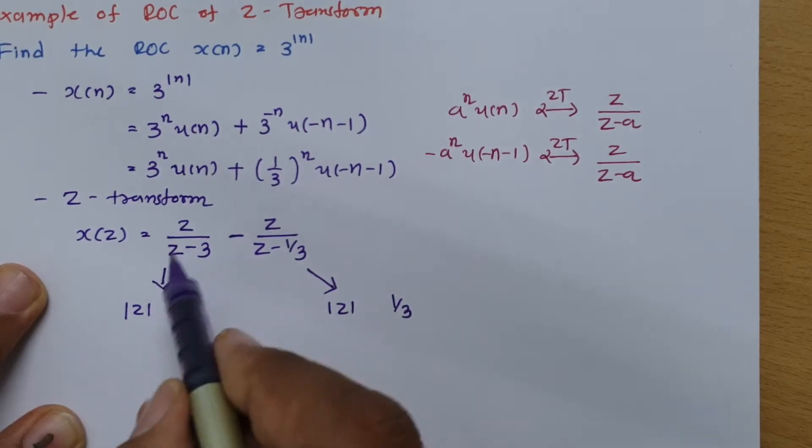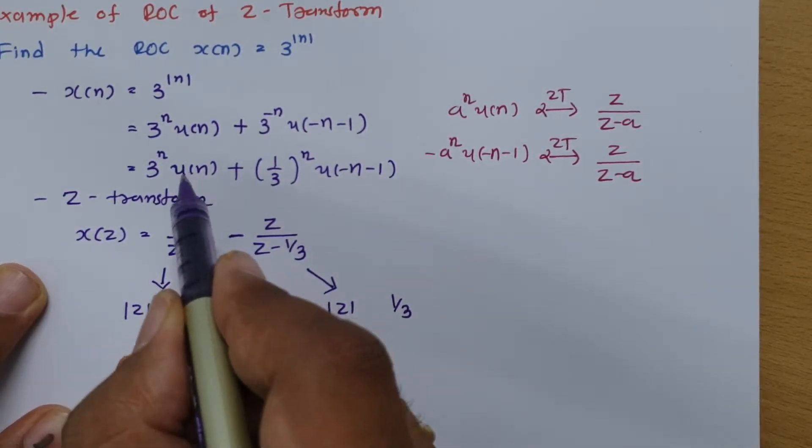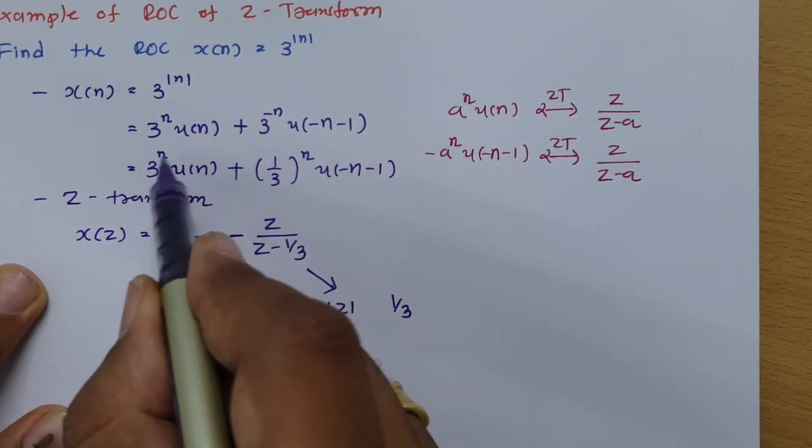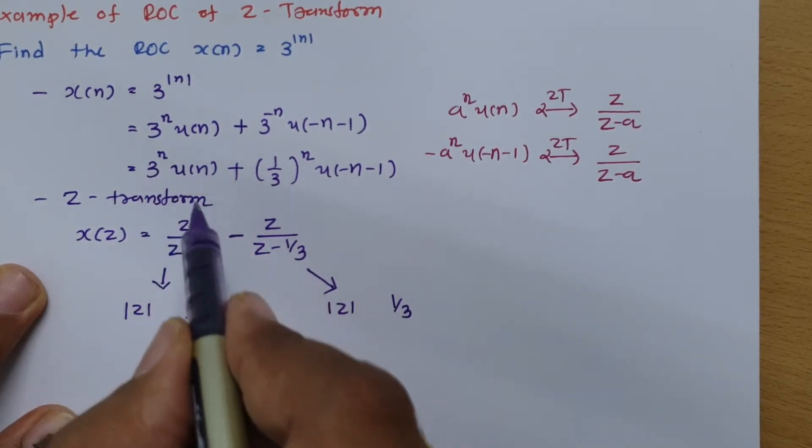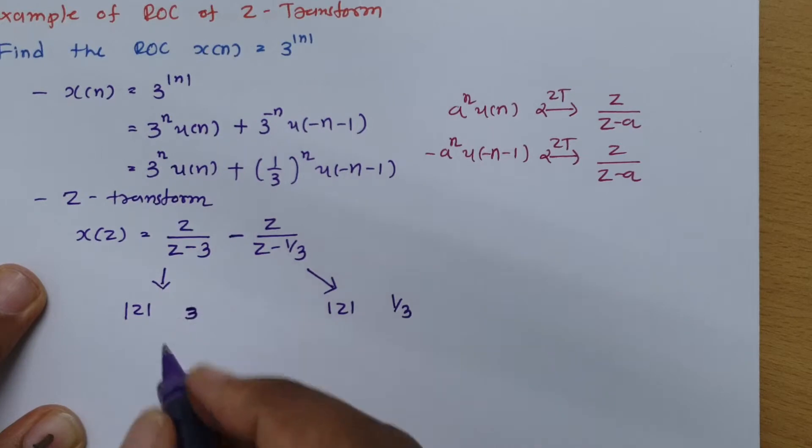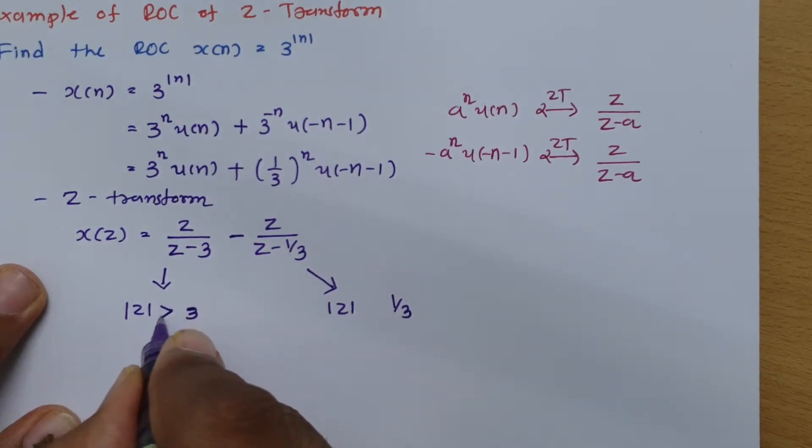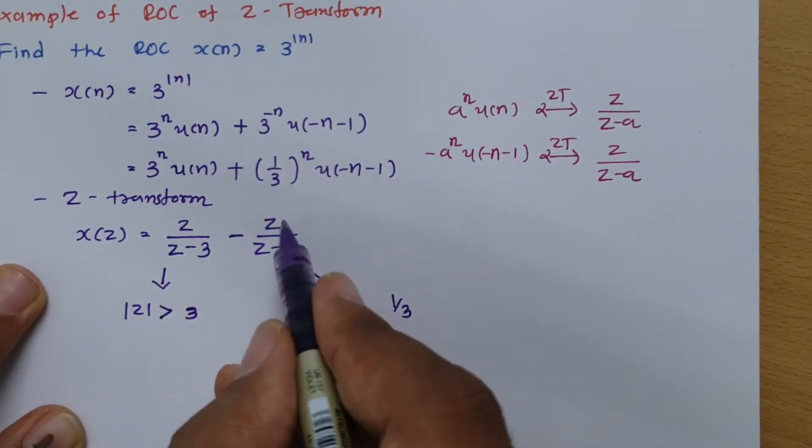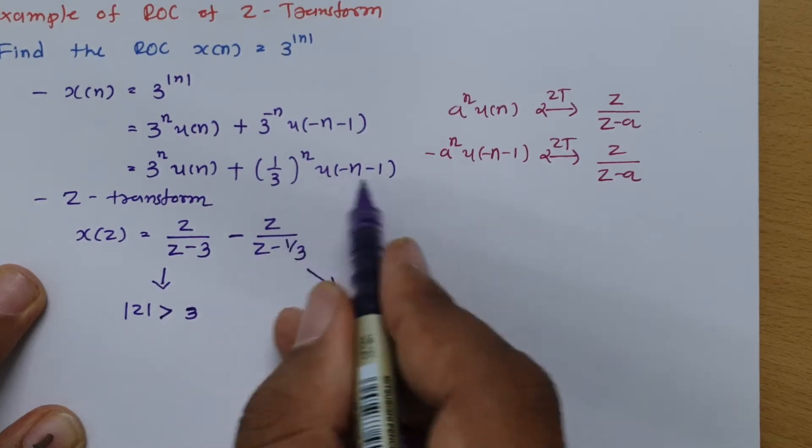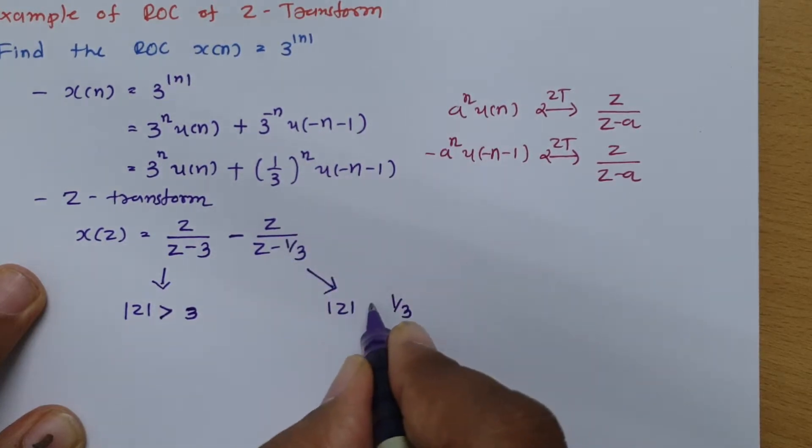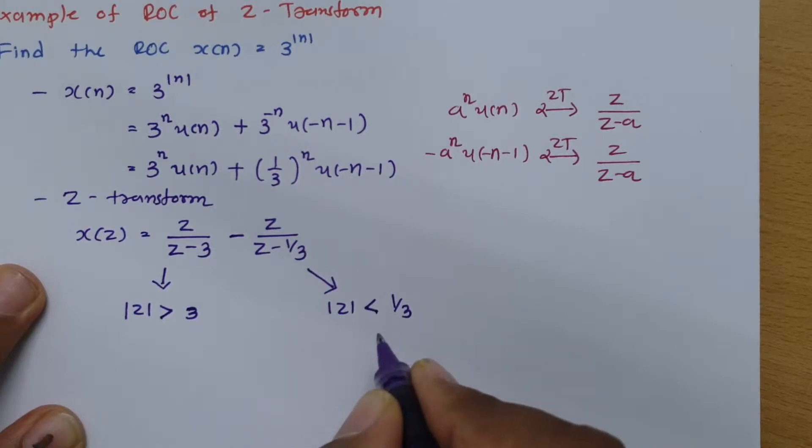Now, this first signal Z/(Z-3) is purely right sided sequence. So as this is purely right sided sequence, we should place greater than sign. And as this is purely left sided sequence, you should place less than sign.